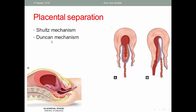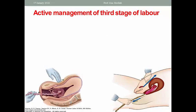In Duncan's method, separation occurs at the edges and proceeds on, making it more liable for retained parts of the placenta and more bleeding. Scholt's mechanism is much better than Duncan's because it results in less bleeding and fewer occurrences of placental remnants.